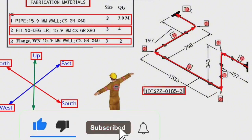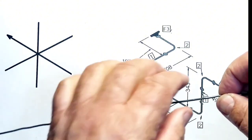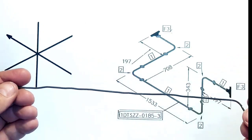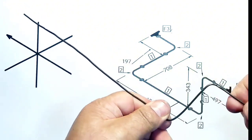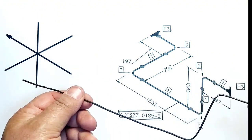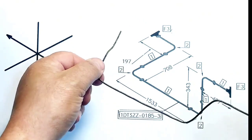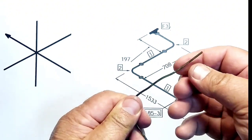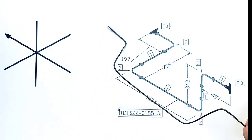Now let's bend the wire of this pipe drawing using the directions we learned. We hold the wire on the horizontal position. Here we are bending the wire to the down. Then we are bending the wire to the north direction. Here we are bending the wire to the east direction. At last, in this point we are bending the wire to the north direction again. So the bent wire of the pipeline is ready.